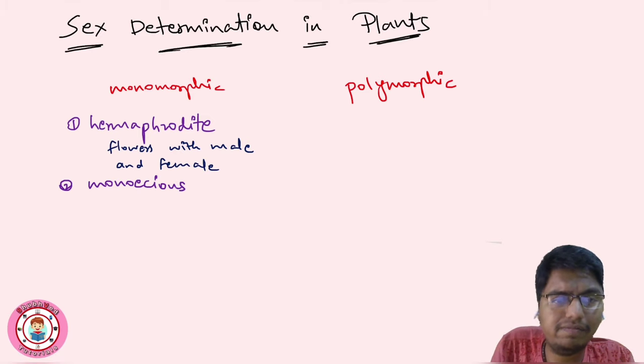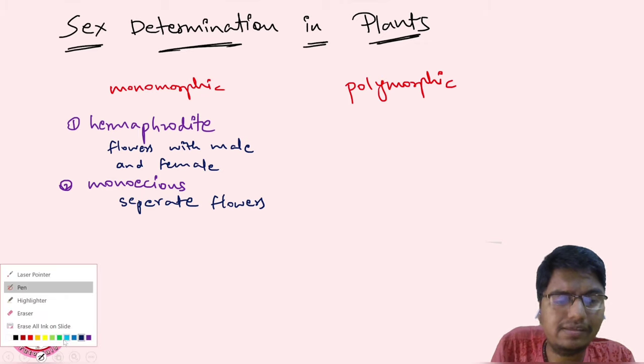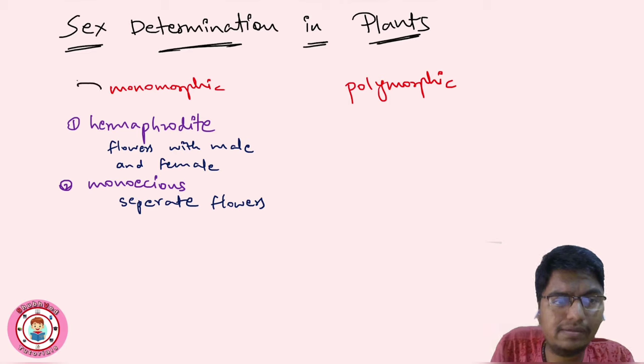Second is monoecious. In monoecious, within a single plant there are separate flowers - separate male and female flowers. But both cases are within a single plant.